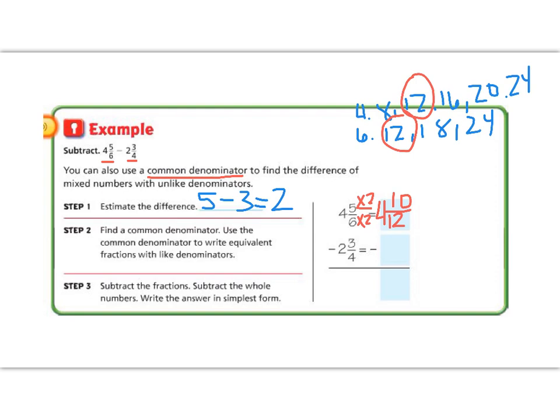Now let's do our second fraction. Its denominator is going to be 12. How do we make a 4 into a 12? We multiply by 3. If we multiply by 3 on the bottom, we have to multiply by 3 on the top. So 3 times 3 is 9. And then bring your whole number, 2, over to your numbers. So now we are subtracting 4 and 10/12 minus 2 and 9/12.